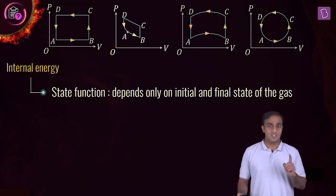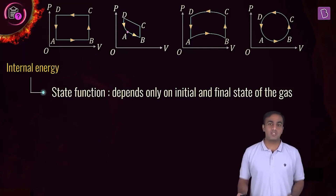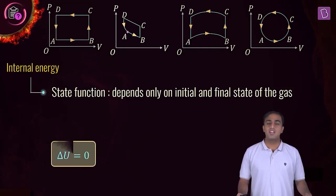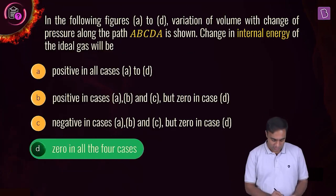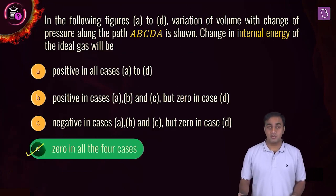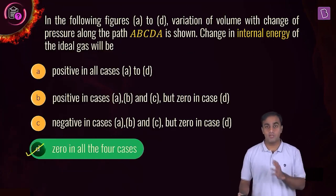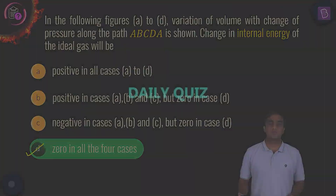The change in the internal energy for any cyclic process for an ideal gas will be zero. So the correct option for this question is D — it is zero in all the four cases.